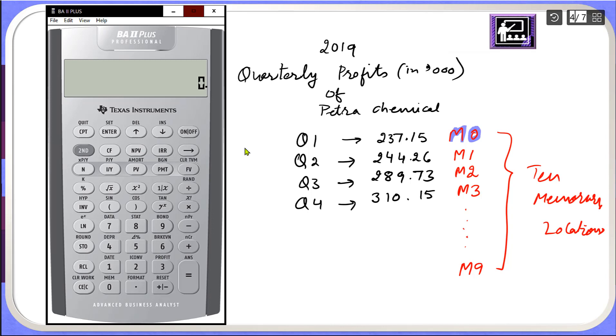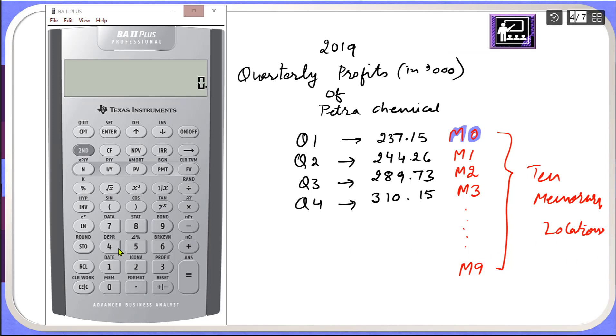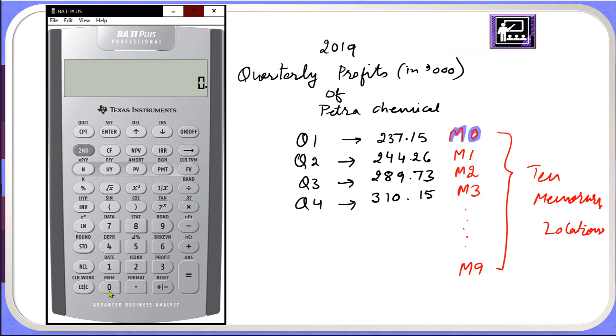We will go to the primary mode to recall these numbers. I will click RCL recall and to recall the first memory location actually I have to press 0. I have recalled first number. I will add to this number, recall 1 plus.